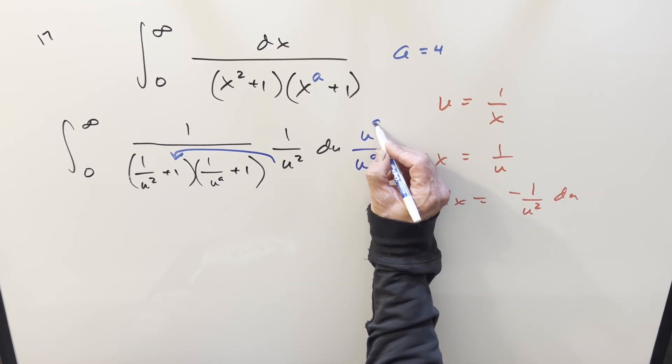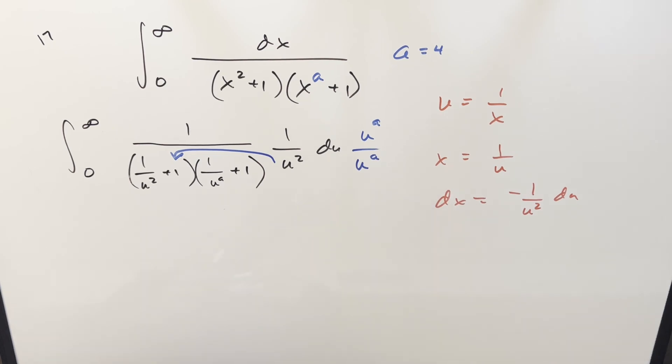So what I want to do is multiply in u^a to cancel that. But I don't want to change it. So if we do it like this, we're just multiplying by one. So then we distribute everything in. What's going to happen now, we just have this u^a over here, this is going to cancel and become 1 + u². I'll just reorder it like this. And then same kind of thing here, it's just going to be u^a + 1.